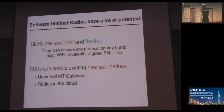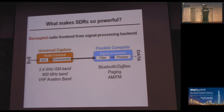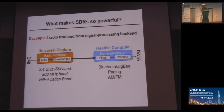So what makes them so flexible? Software-defined radios decouple the radio front-end, which is responsible for capturing the signals from the spectrum, and the signal processing back-end, which analyzes the signals and decodes the information bits. Having this decoupling makes the process flexible. For example, the radio front-end can tune in and capture signals from any band — you can tune into an ISM band at 2.4 gigahertz or 900 megahertz, or figure out what is happening in aviation bands. Also, having flexible compute lets you decode any number of protocols, for example Bluetooth, ZigBee, Wi-Fi, AM, FM — any number of them using open source packages freely available on the internet.